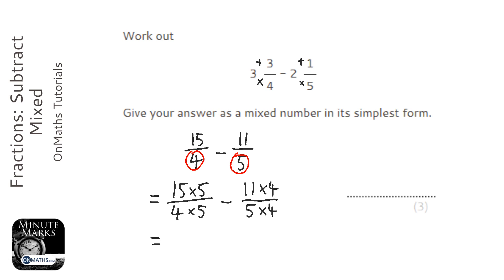So 15 times 5 is 75 over 20, and 11 times 4 is 44 over 20.